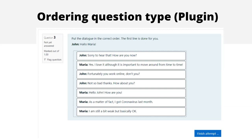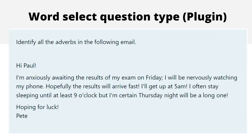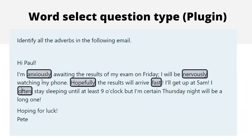You remember we mentioned Word Select when talking about listening — of course you can also use it for reading. In this case it's a kind of grammar identification: learners read a passage and identify all the adverbs by clicking on them. It could be verbs, aspects of verbs, cases, the gerund, or anything else. You can also do this with Mark the Words, but the developer who made Word Select — Marcus Green — also made another plugin question type called Gap Fill.